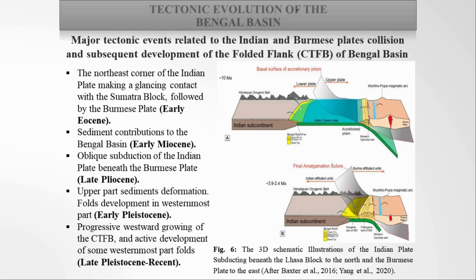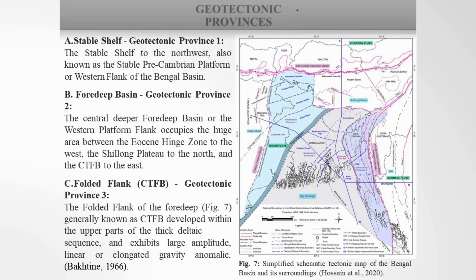In Late Pliocene, there was oblique subduction of the Indian plate beneath the Burmese plate in an arc-trench setting, which developed an accretionary prism and the Chittagong-Tripura fold belt. Two figures demonstrate subduction of the Indian plate beneath the Eurasian plate and the Burmese plate respectively. Three geotectonic provinces have been subdivided: Province one, the stable shelf to the northwest; Province two, the central foreland basin; and Province three, the fold-thrust belt to the east, generally known as the Chittagong-Tripura fold belt.